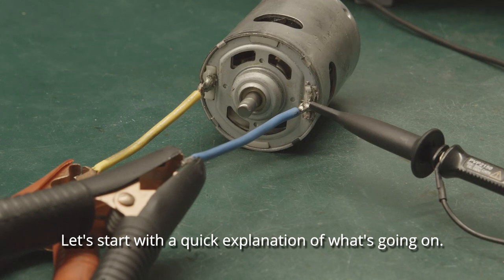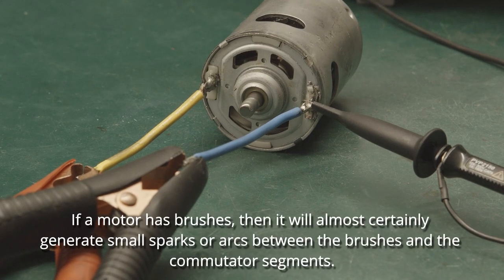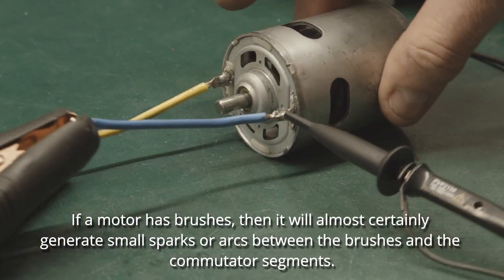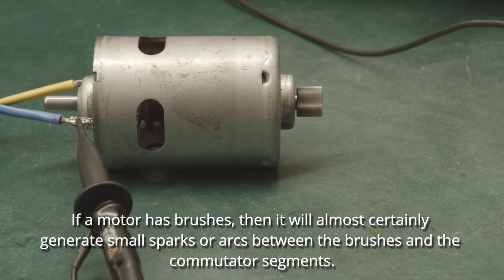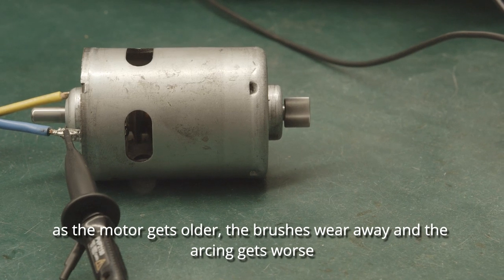Let's start with a quick explanation of what's going on. If a motor has brushes then it will almost certainly generate small sparks or arcs between the brushes and the commutator segments. As the motor gets older the brushes wear away and the arcing gets worse.